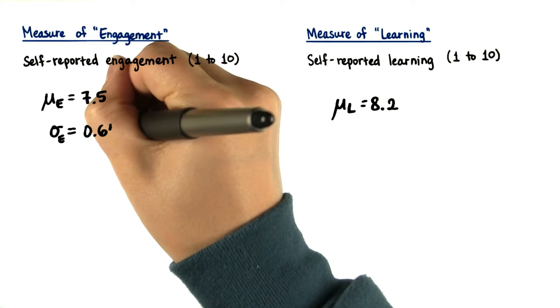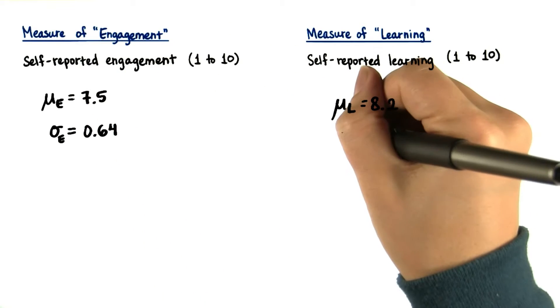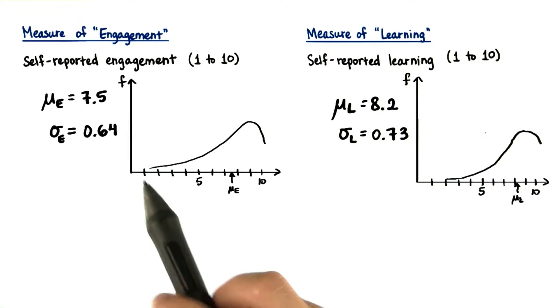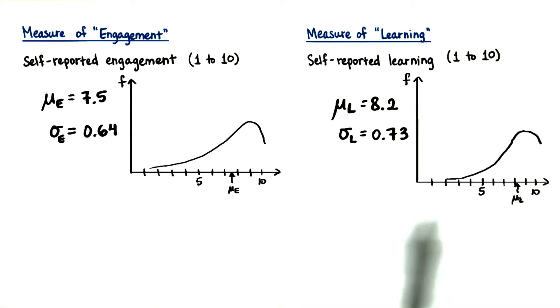And let's say the associated standard deviations are 0.64 and 0.73. Now let's say our distributions look like this for each measure. So they're negatively skewed.